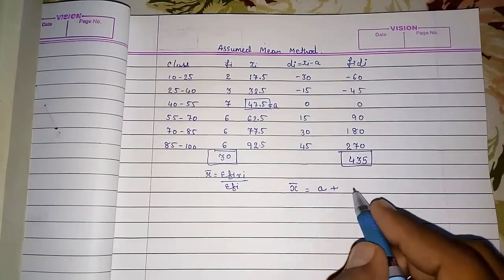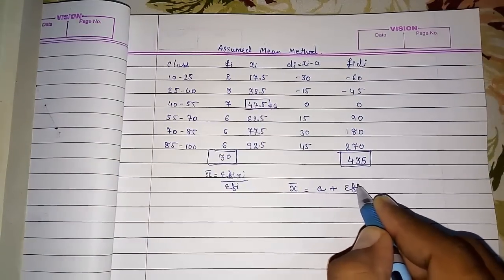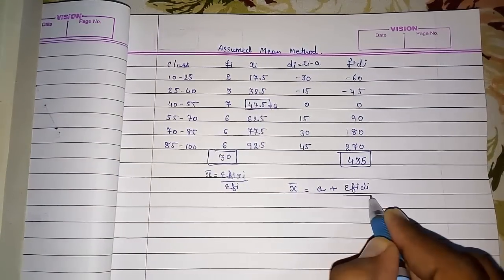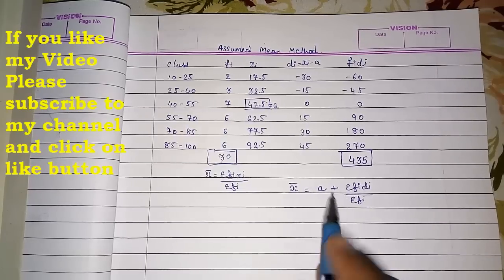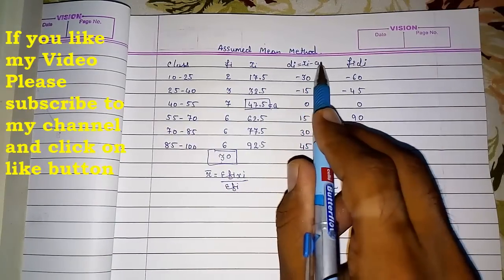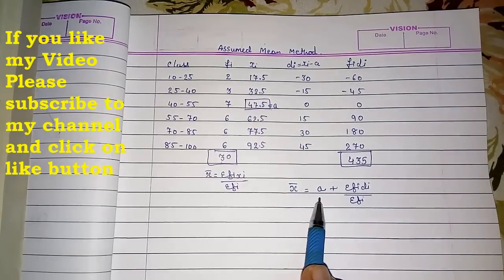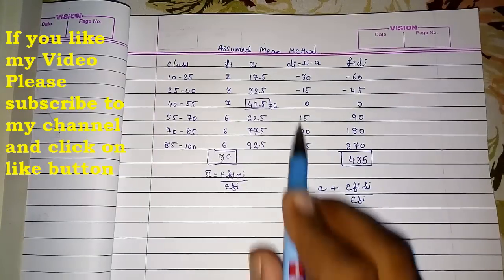a plus, and now we are having this number, so this is Σfi di. This is 30, that is Σfi. What we had done? Actually, we had reduced this by subtracting a, and then we had added that a in our formula. It's so simple.